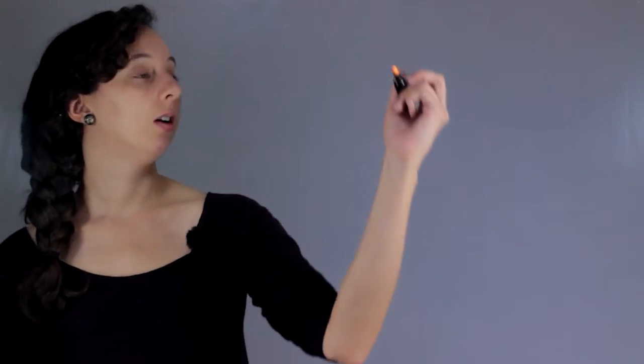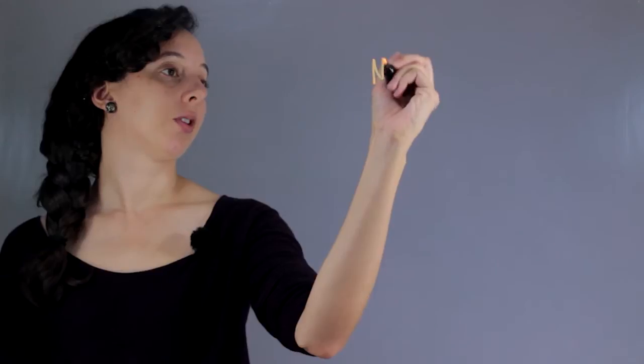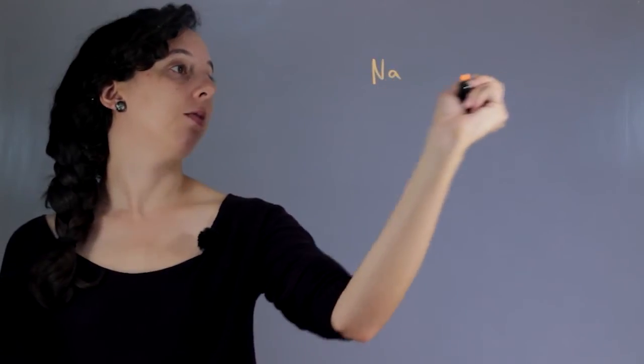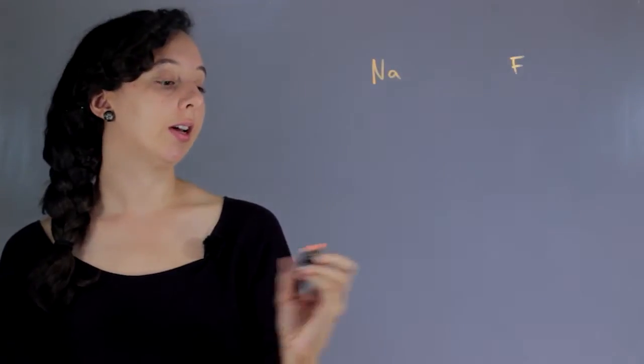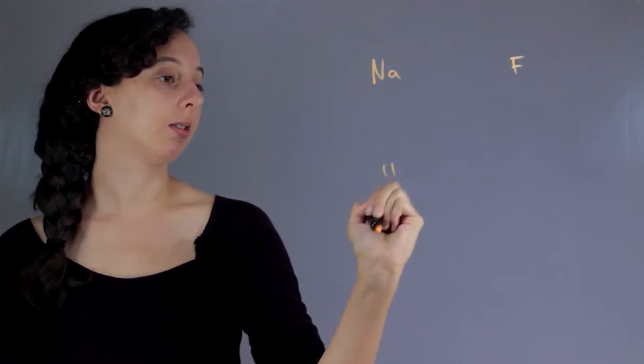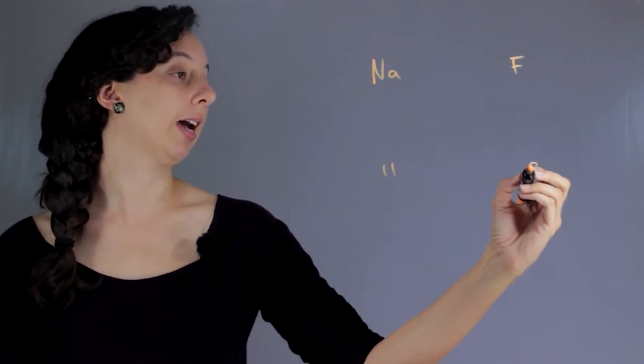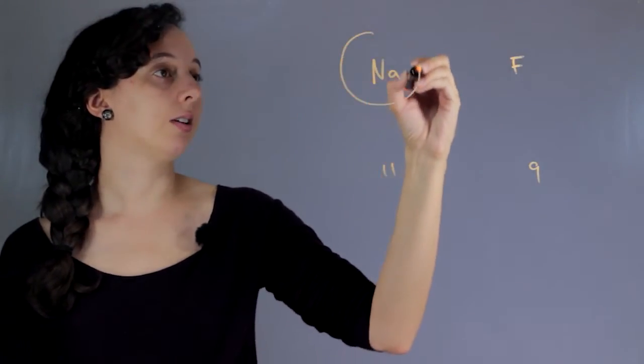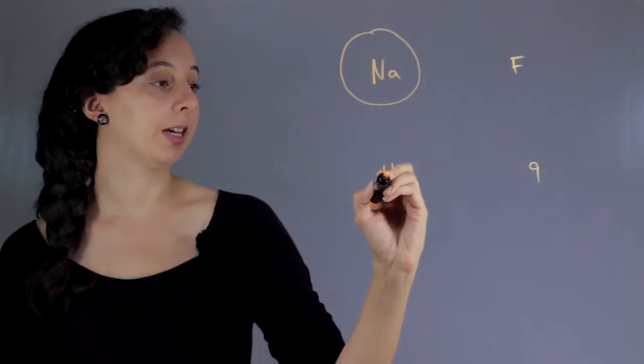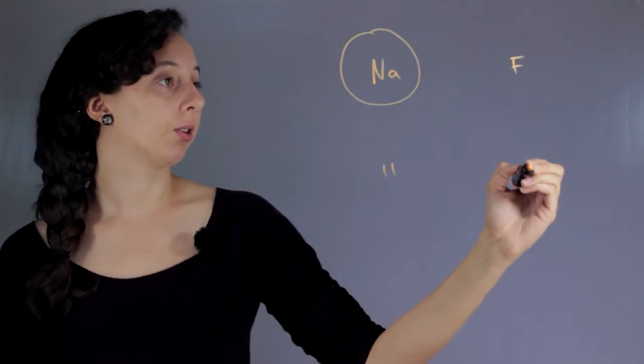Okay, so let's start with a couple of examples. We'll look at sodium, Na, and we'll look at fluorine, F. So sodium is atomic number 11, fluorine is atomic number 9. And this means that they each have, this has 11 protons and electrons, and this has 9 protons and electrons.